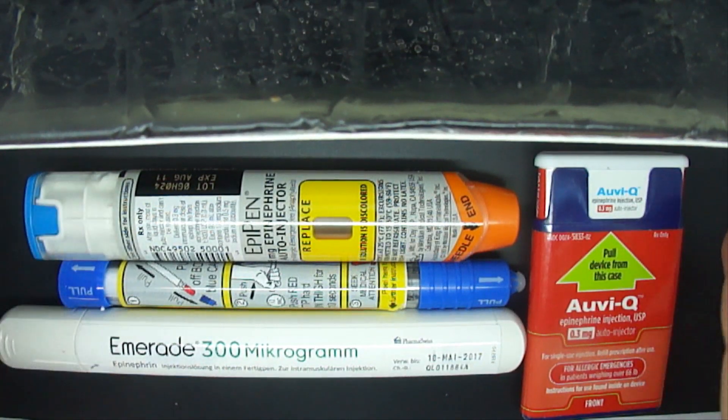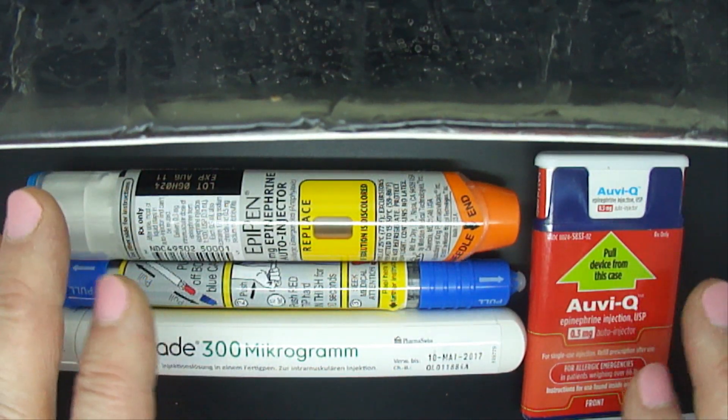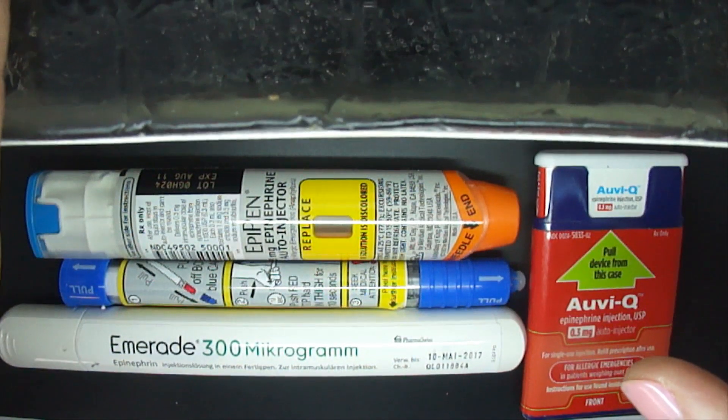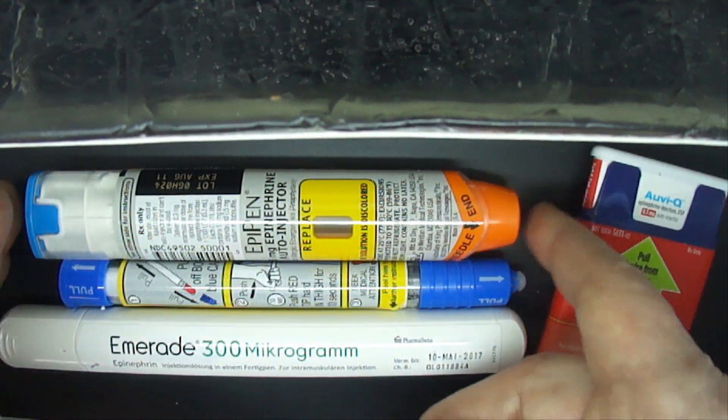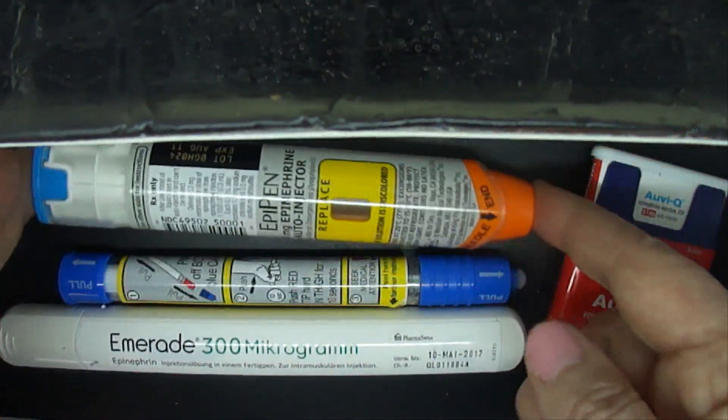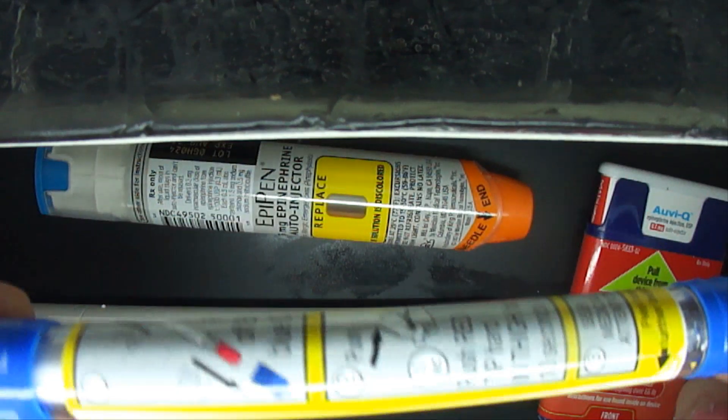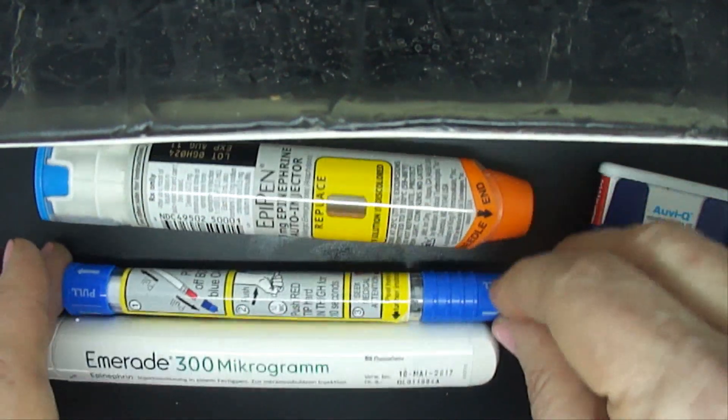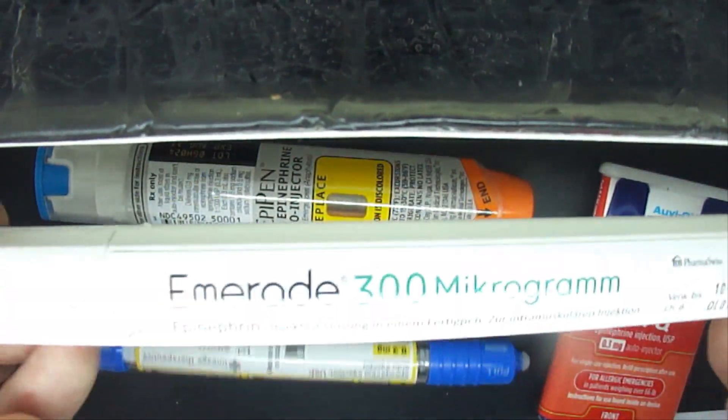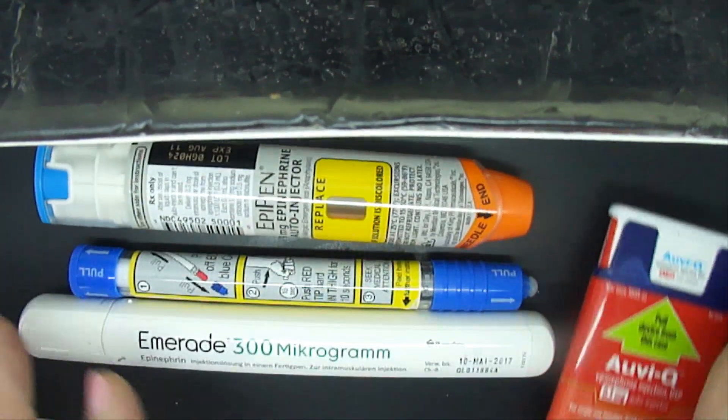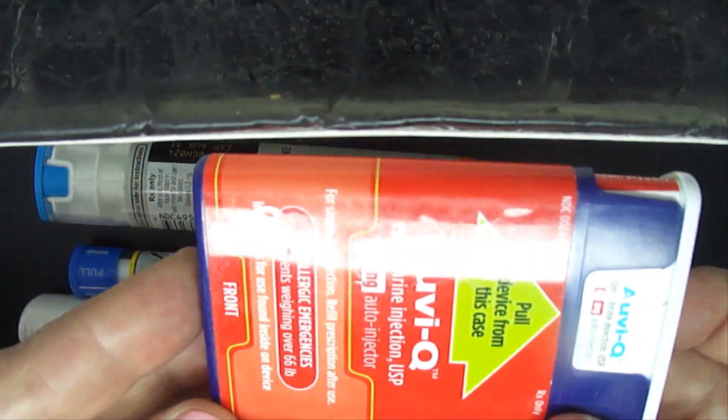As you can see, I have four different epinephrine auto-injectors, and I'm going to fire two of each of these devices into this block of ballistic gelatin. So I have a Mylan EpiPen, an Impax Lineage Generic Epinephrine, it's a generic for adrenoclic, an Emirad Epinephrine device, this is available in Europe, and a Kaleo Auvi-Q.